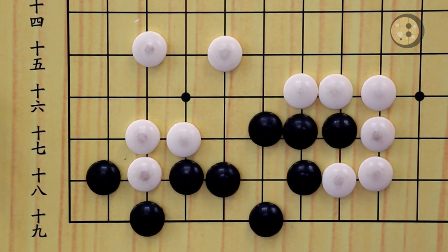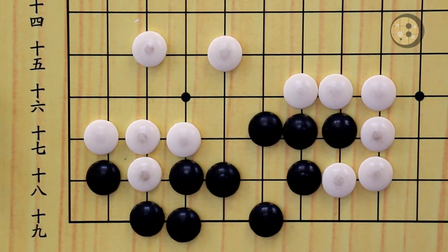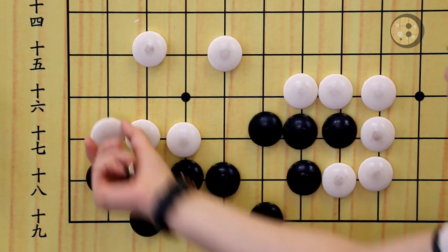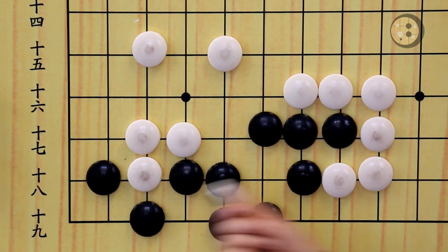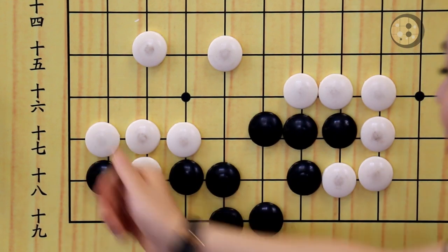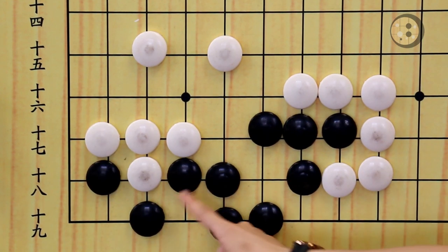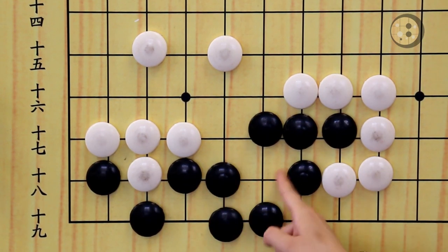If white blocks here, you're going to make the second eye here. If white throws in here, now you've got to be very careful. If you capture, no, you got tricked. And now white gets a sente to destroy the eye here. Now you only have one eye over here. The eye in the corner also disappeared.